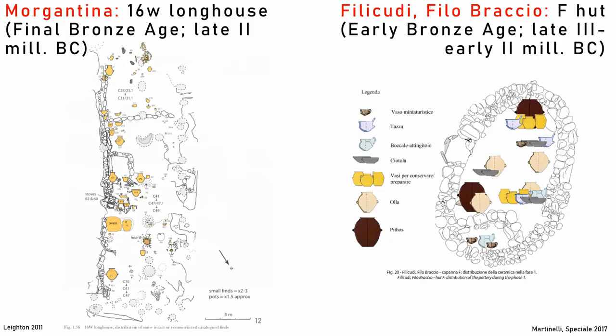In another case, a simpler, more descriptive approach has been adopted. For the final Bronze Age longhouse in Morgantina, published in 2011, we can observe a simple approach with well-preserved pottery vessels only typologically characterized.